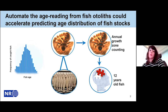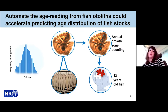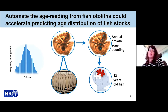What the experts do is analyze images of these otoliths. First of all, this process is time consuming, and it is also challenging. If we take an otolith that belongs to a 12-year-old fish, you may have different ways of analyzing the annual growth zones that will enable you to tell that this fish is actually 12 years old.